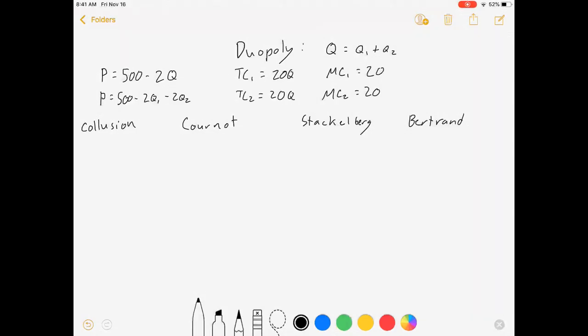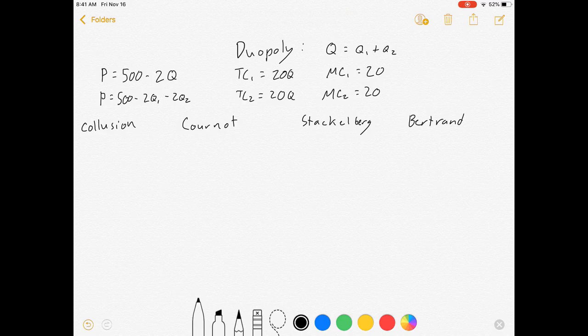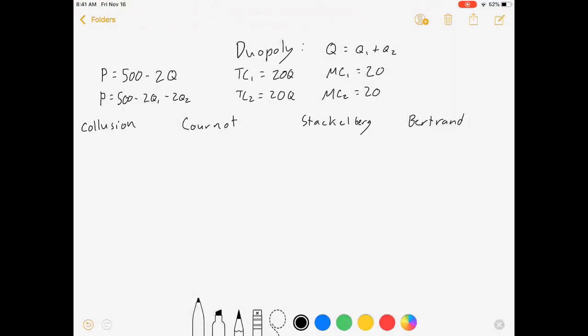Hello everyone, welcome to my video where we cover some duopoly competition methods. This is our first time really getting into any strategic behavior where firms actually have to consider the actions of the other firm when making profit-maximizing decisions. We're going to solve for equilibrium quantity and prices under four different competitive structures. This is intended for an intermediate microeconomics course.